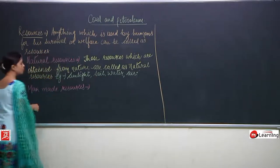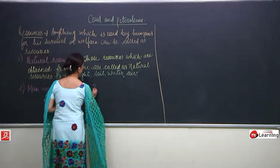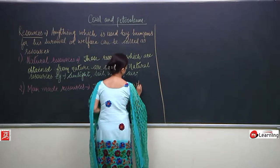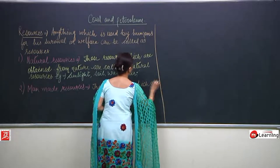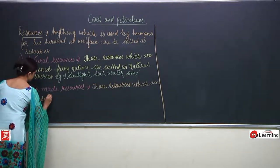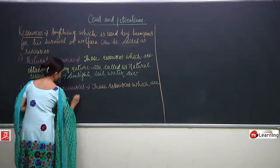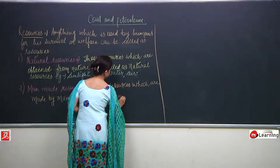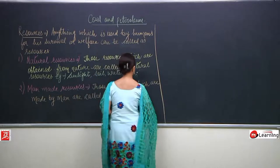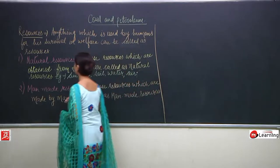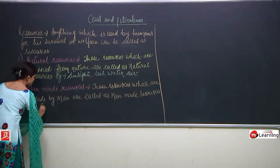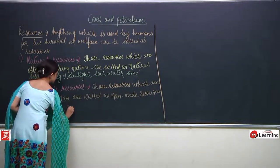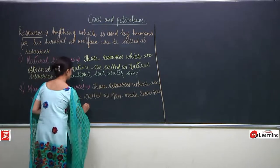How can we define manmade resources? Those resources which are made by man are called manmade resources. Examples include plastic, cement, and glass.